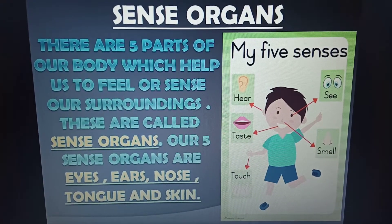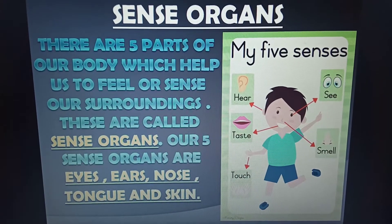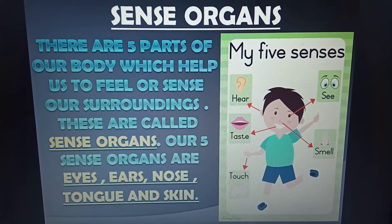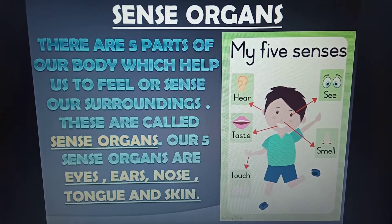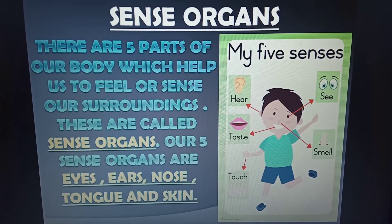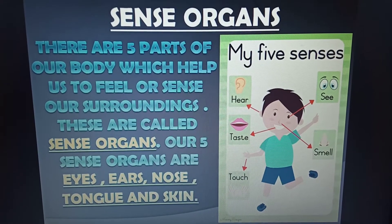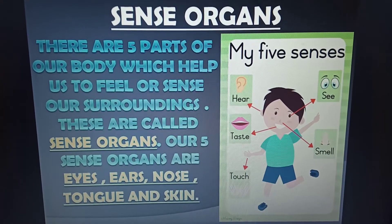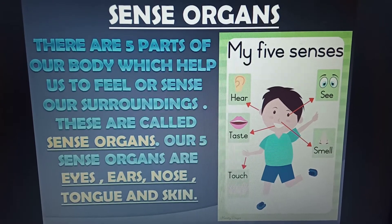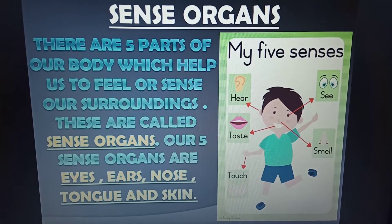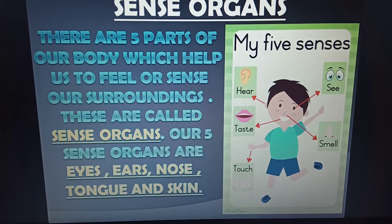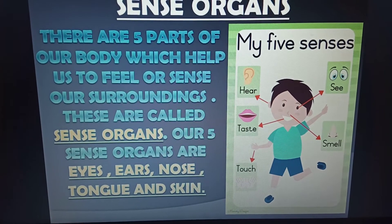Now we will come to the topic of sense organs. There are 5 parts of the body which help us to feel or sense our surroundings. These are called sense organs. The 5 sense organs are eyes, ears, nose, tongue and skin.